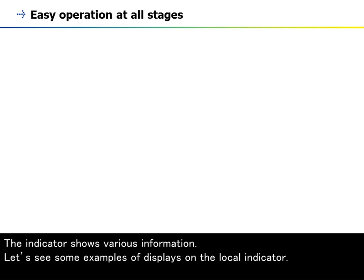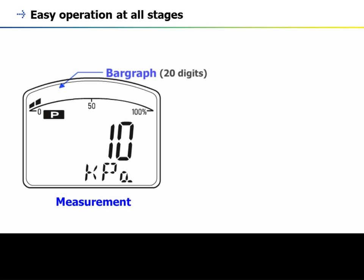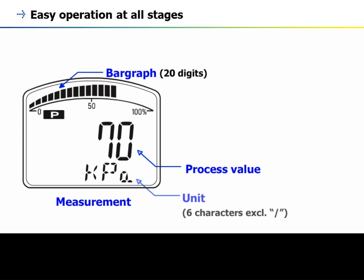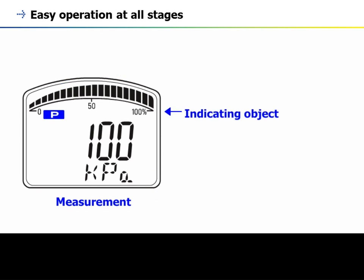The indicator shows various information. Let's see some examples of displays on the local indicator: bar graph, process value, unit. P — pressure.